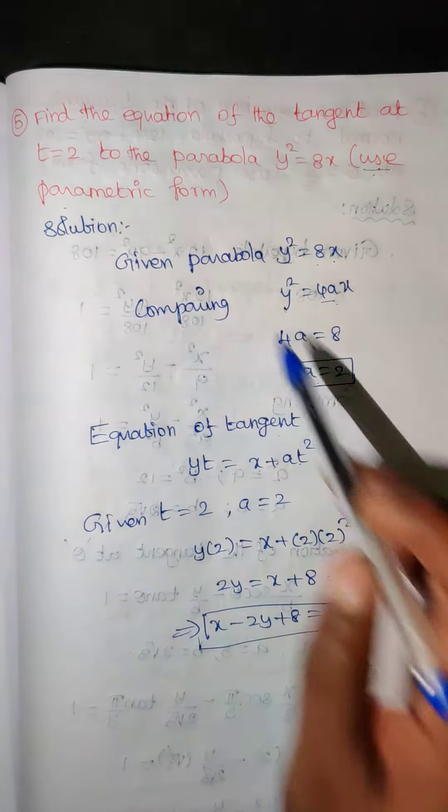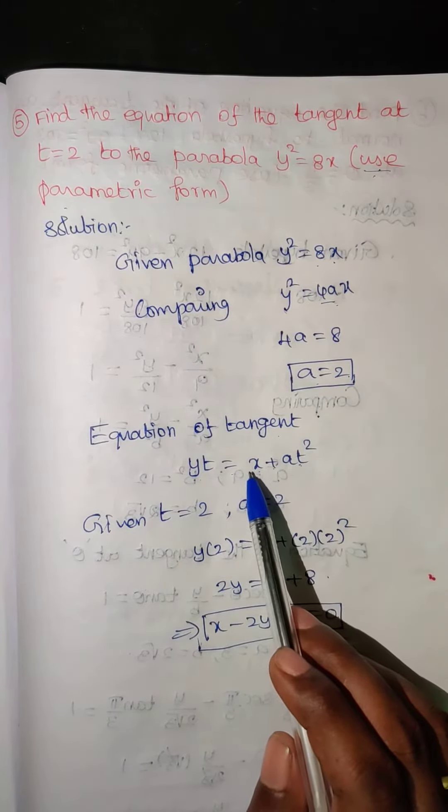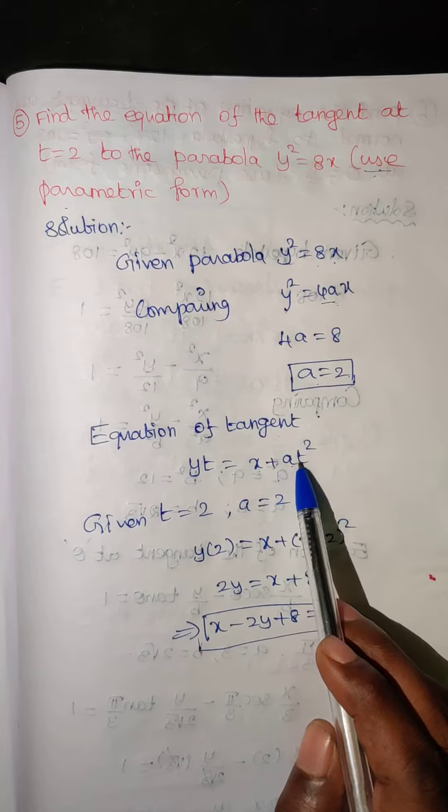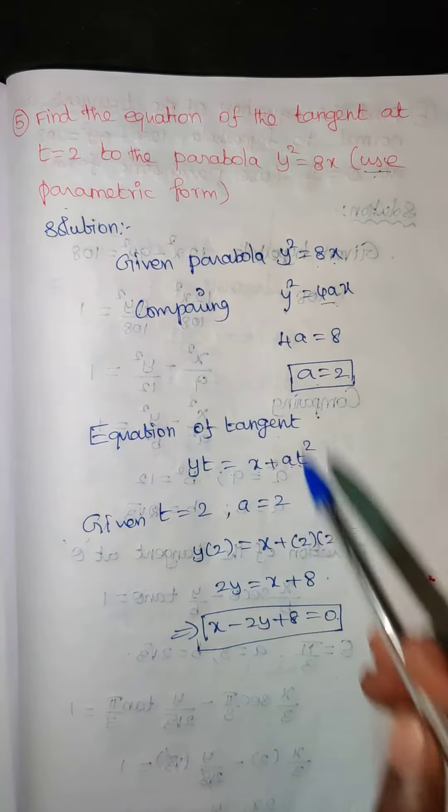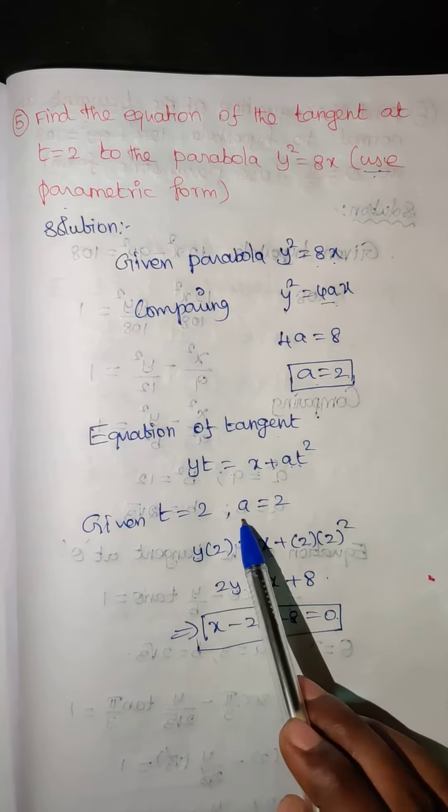In parametric form, yt equals x plus at squared. We already know a value is 2 and t value is given as 2. So given t equals 2 and a value is 2.